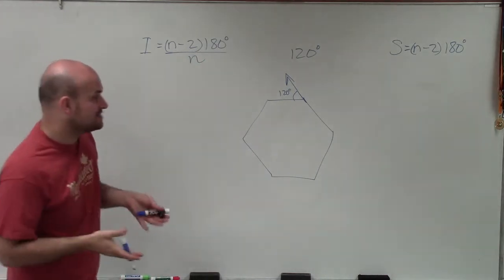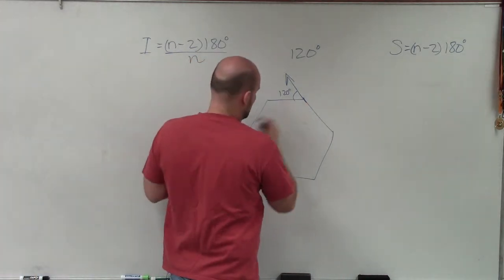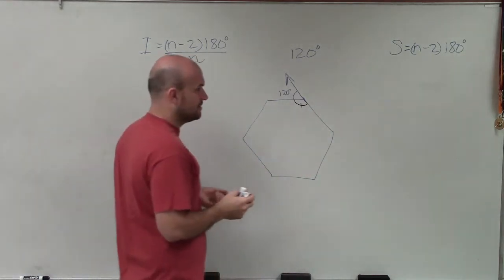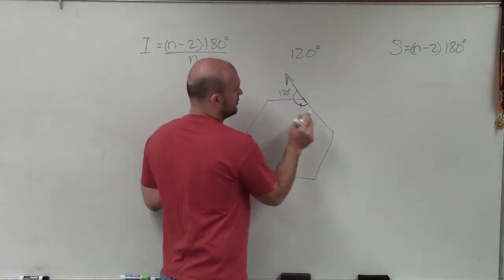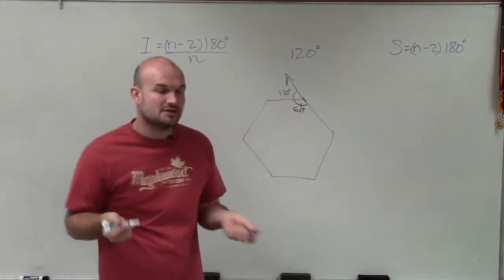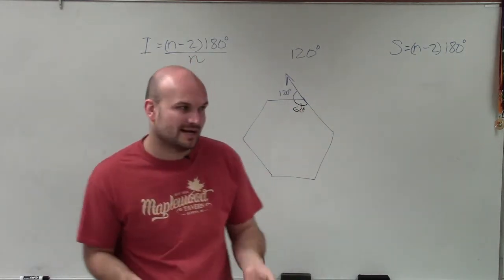Now remember, the exterior angle and the interior angle are a linear pair. That means they are supplementary, right? And so therefore, we can see that if that's 120 degrees, then this has to be 60 degrees, because since they're a linear pair and supplementary, they have to add up to 180.